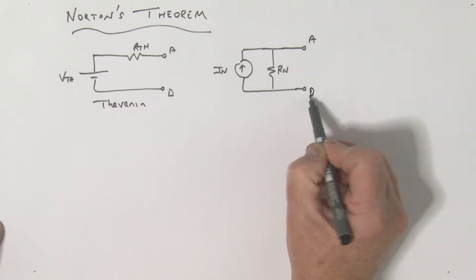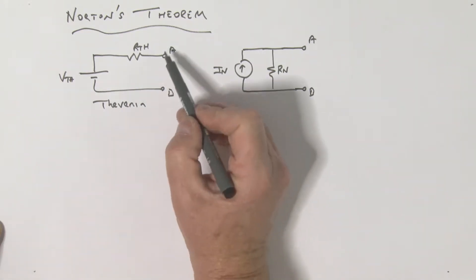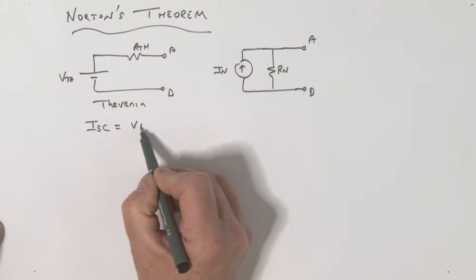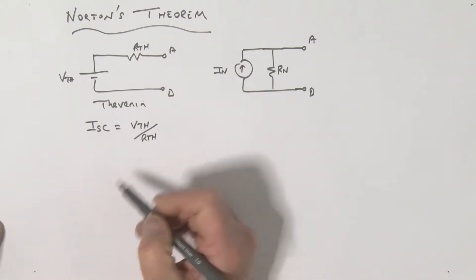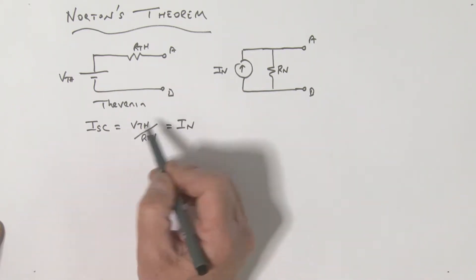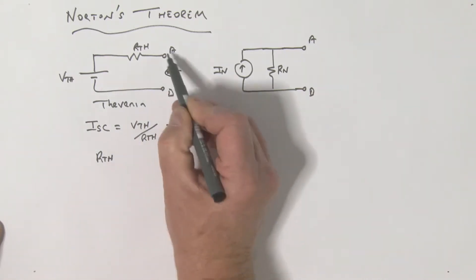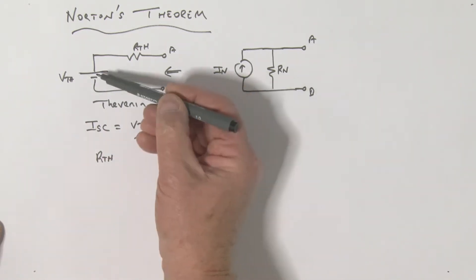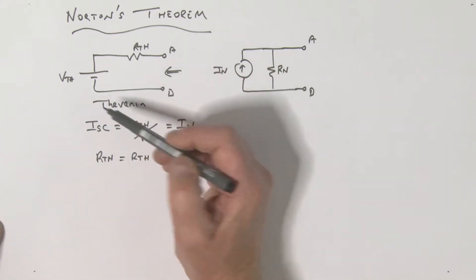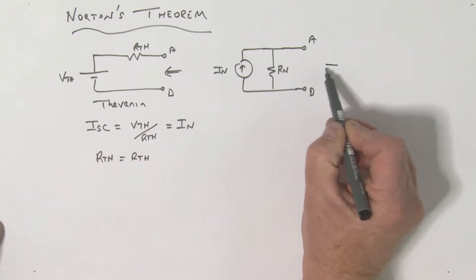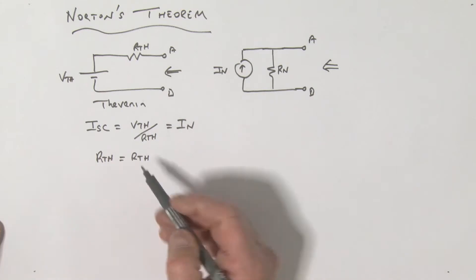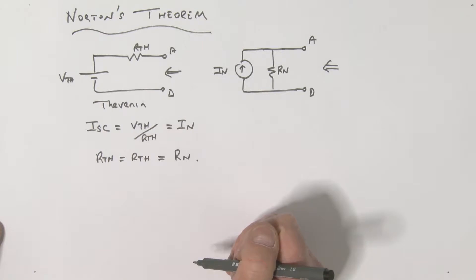These two circuits are equivalent. If I put a short across the Thevenin circuit, the short circuit current equals the Thevenin voltage divided by the Thevenin resistance. That short circuit current is also the Norton current. The Thevenin resistance is the resistance looking into terminals A and B with independent sources zeroed. Zeroing the current source in the Norton circuit means an open circuit, so the Norton resistance equals the Thevenin resistance.